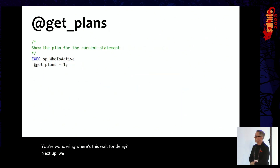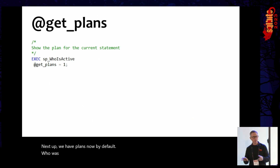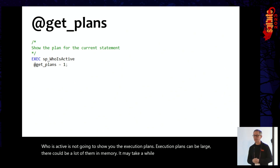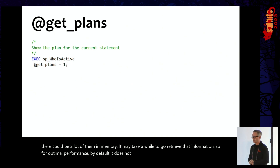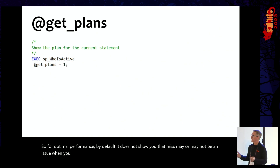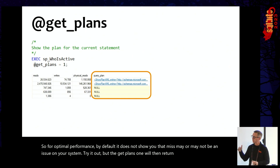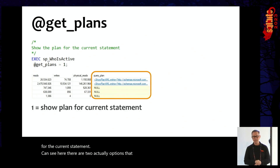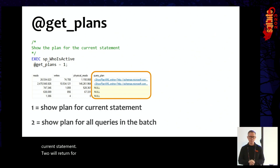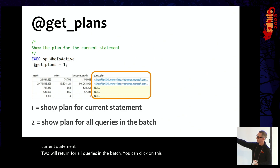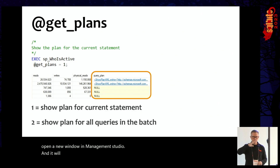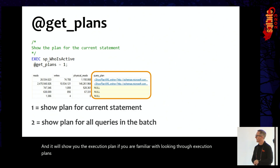Next, we have get_plans. By default, Who Is Active does not show you execution plans — execution plans can be large, there could be many in memory, and it may take a while to retrieve that information, so for optimal performance it's off by default. Get_plans set to one will return the execution plan for the current statement. There are two options: one returns the current statement, two returns all queries in the batch. This is clickable XML that opens a new window in Management Studio showing the execution plan.